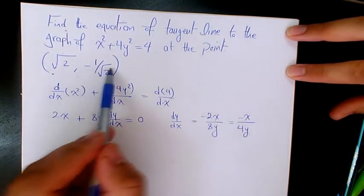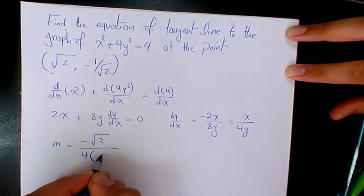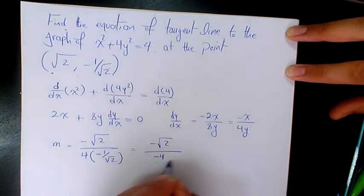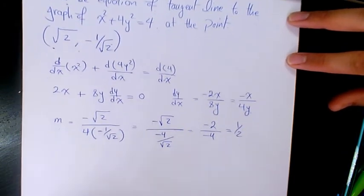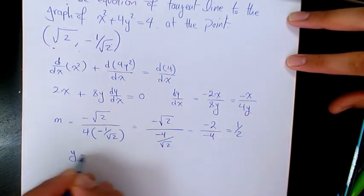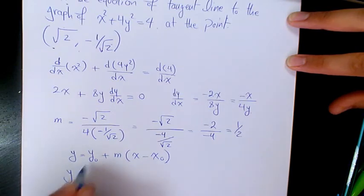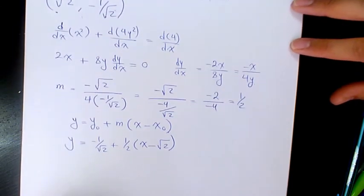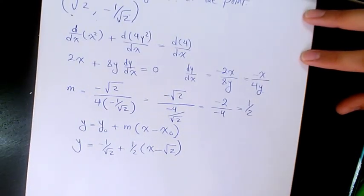To find the slope, substitute (√2, -1/√2): m = -√2 divided by 4·(-1/√2) = -√2 · (-√2/4) = 2/4 = 1/2. The equation of the tangent line is y = y₀ + m(x - x₀), so y = -1/√2 + (1/2)(x - √2). I hope you enjoyed this video — please leave a comment if you have any questions. Thank you for watching and have a great day!